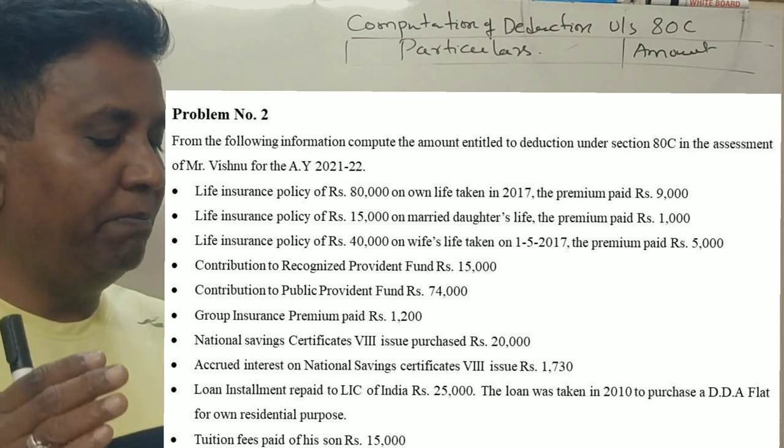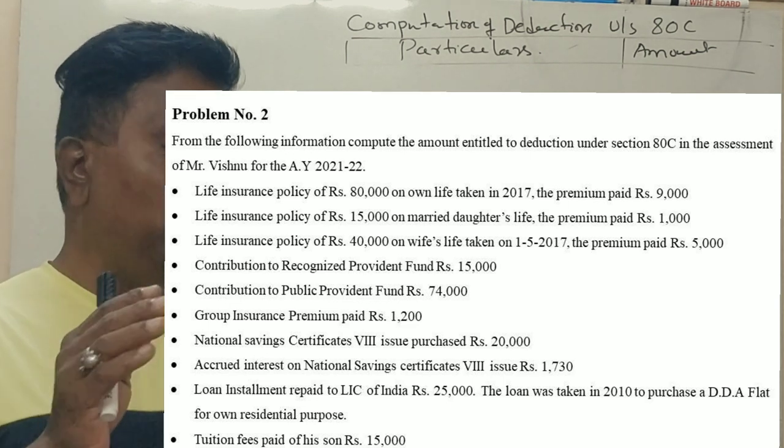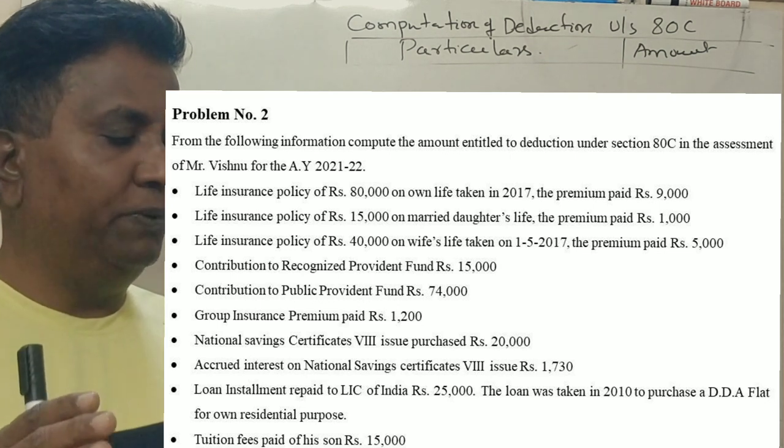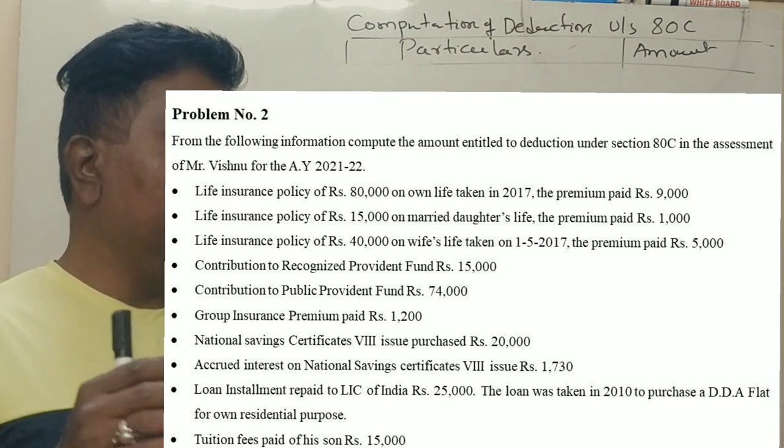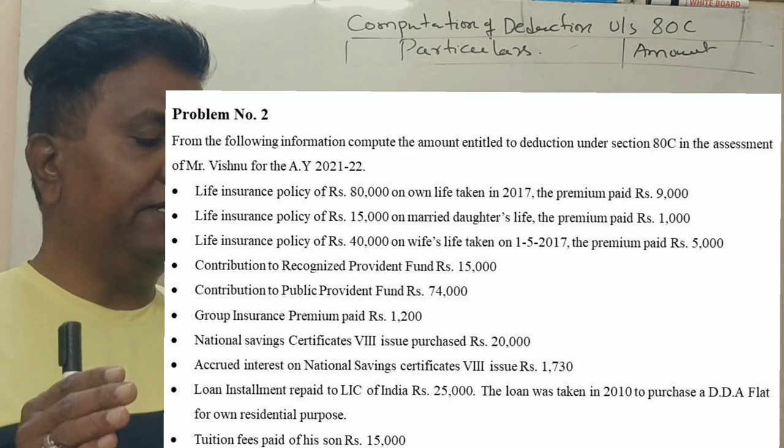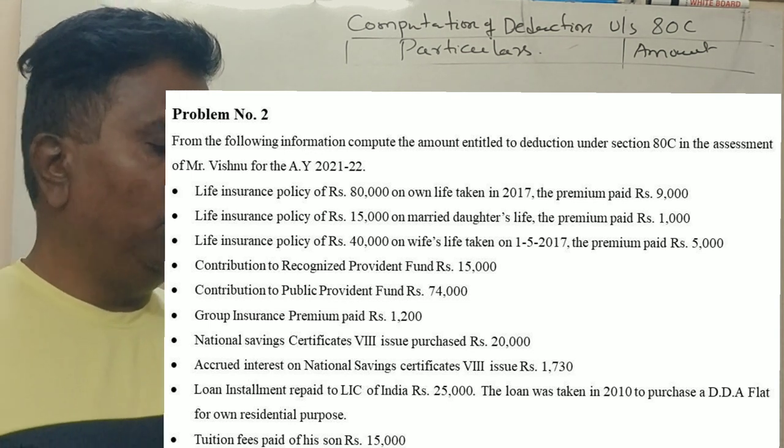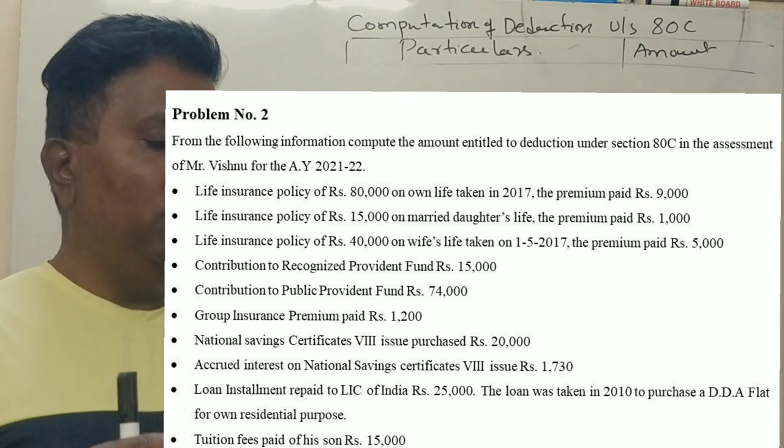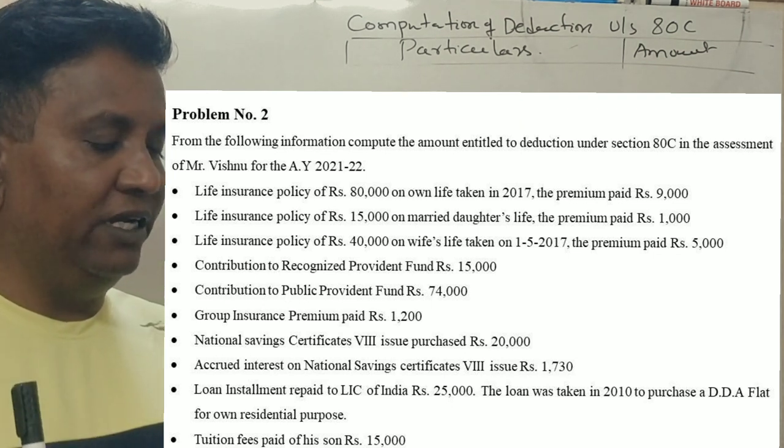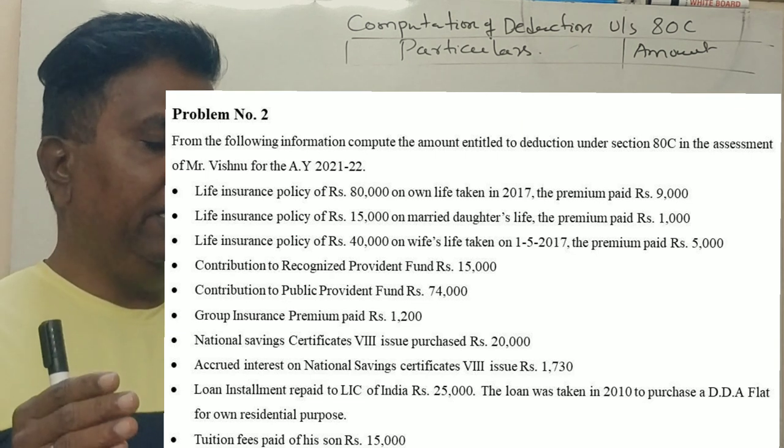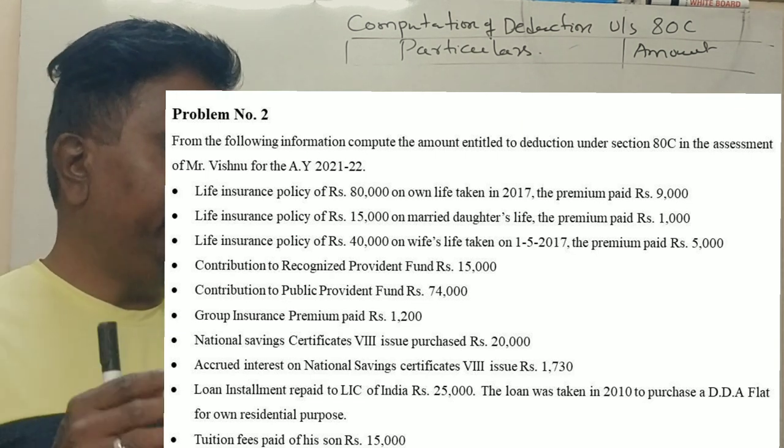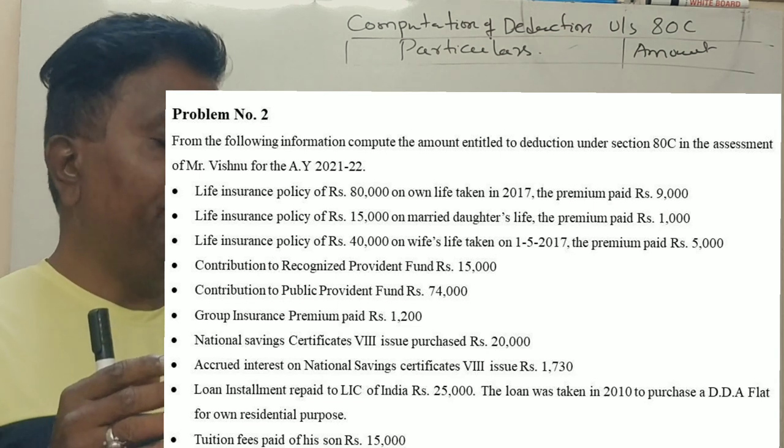Group insurance premium paid, 1,200. National Savings Certificate 8th Issue purchased, 20,000. Accrued interest on National Savings Certificate 8th issue, 1,730. Loan installment repaid to LIC of India, 25,000. The loan was taken in 2010 to purchase a DDA flat for own residential purpose. Tuition fee paid, Rs. 15,000.